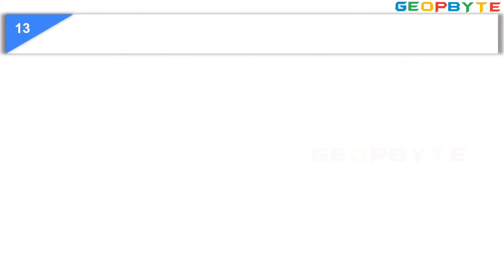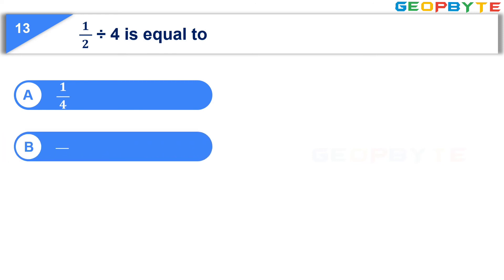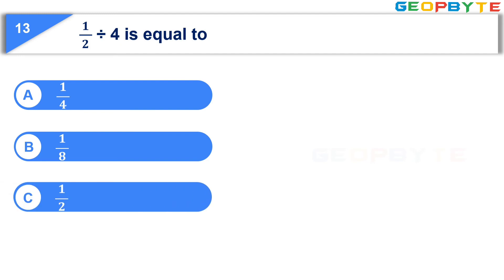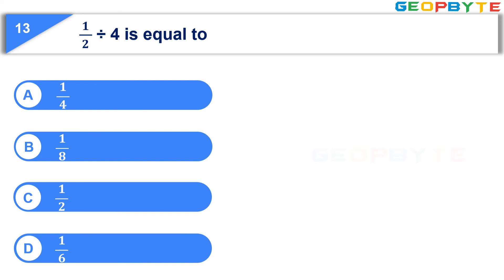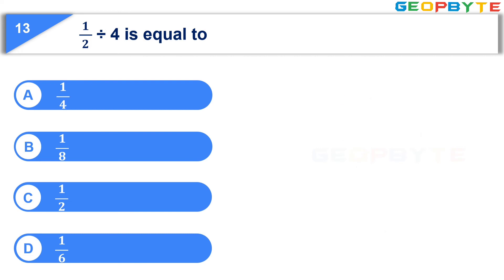Moving to the next question. One by two divided by four is equal to: option A, one and one by four; option B, one by eight; option C, one by two; option D, one by six. Your time starts now. Your time is up and the correct answer is option B, one by eight.